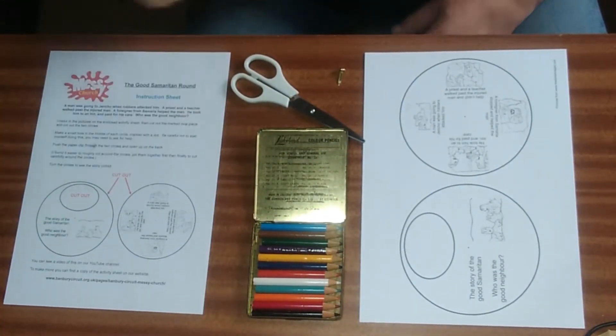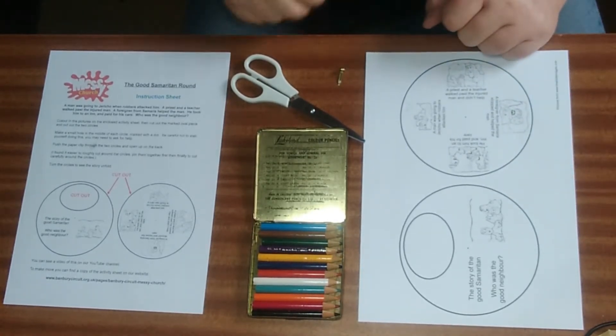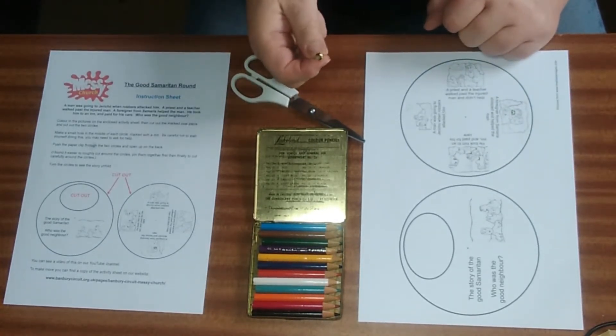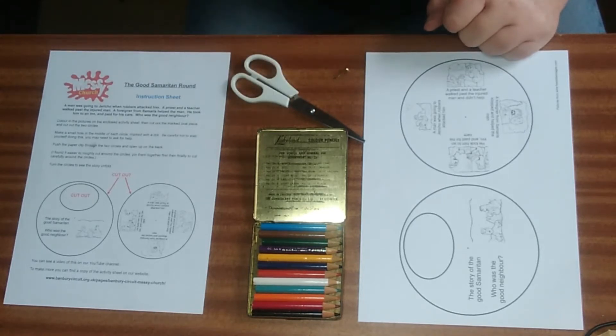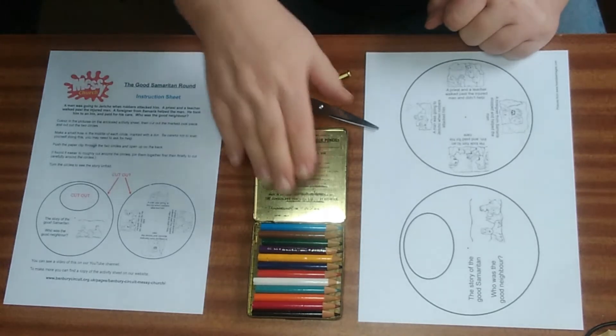In the bag you'll find the instruction sheet and the activity sheet and a paper fastener. You'll also need a pair of scissors and if you're coloring in, something to color in with.